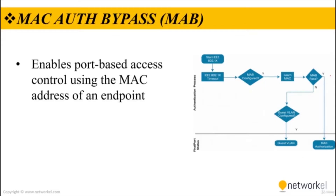MAC Authentication Bypass (MAB) is an access control technique that enables port-based access control using the MAC addresses of an endpoint. It is typically used as a fallback mechanism to 802.1x, and a port can be dynamically enabled or disabled based on the MAC address of the endpoint that connects to it.